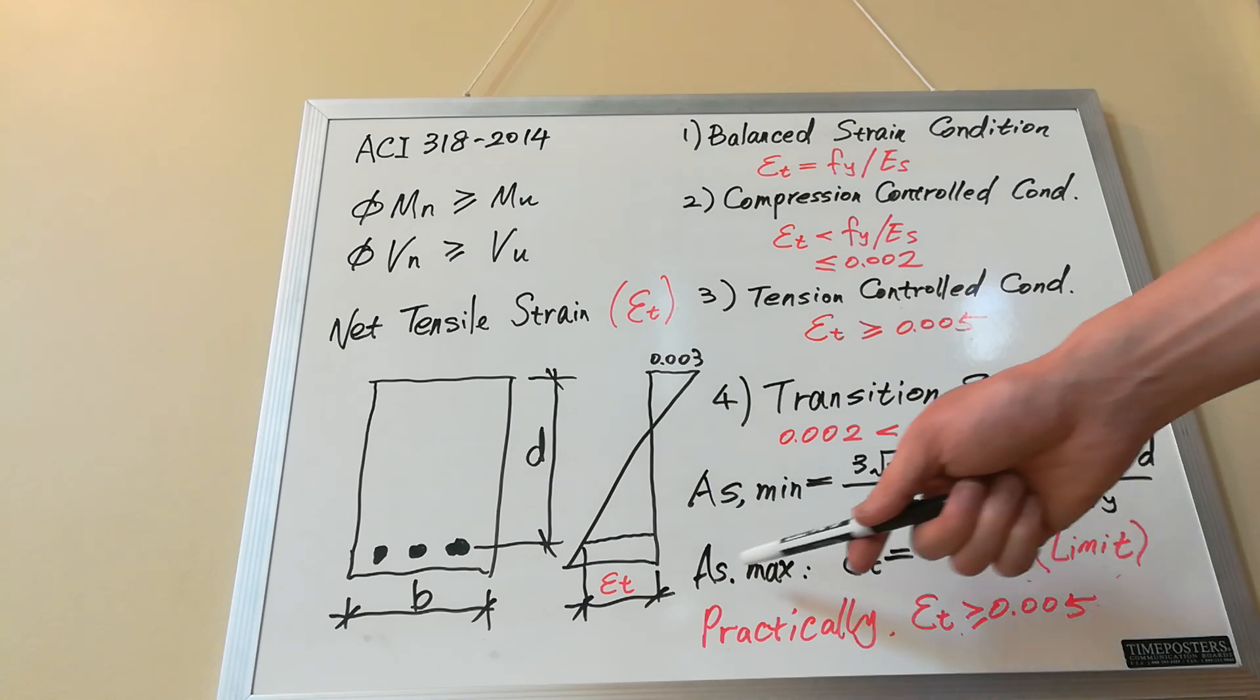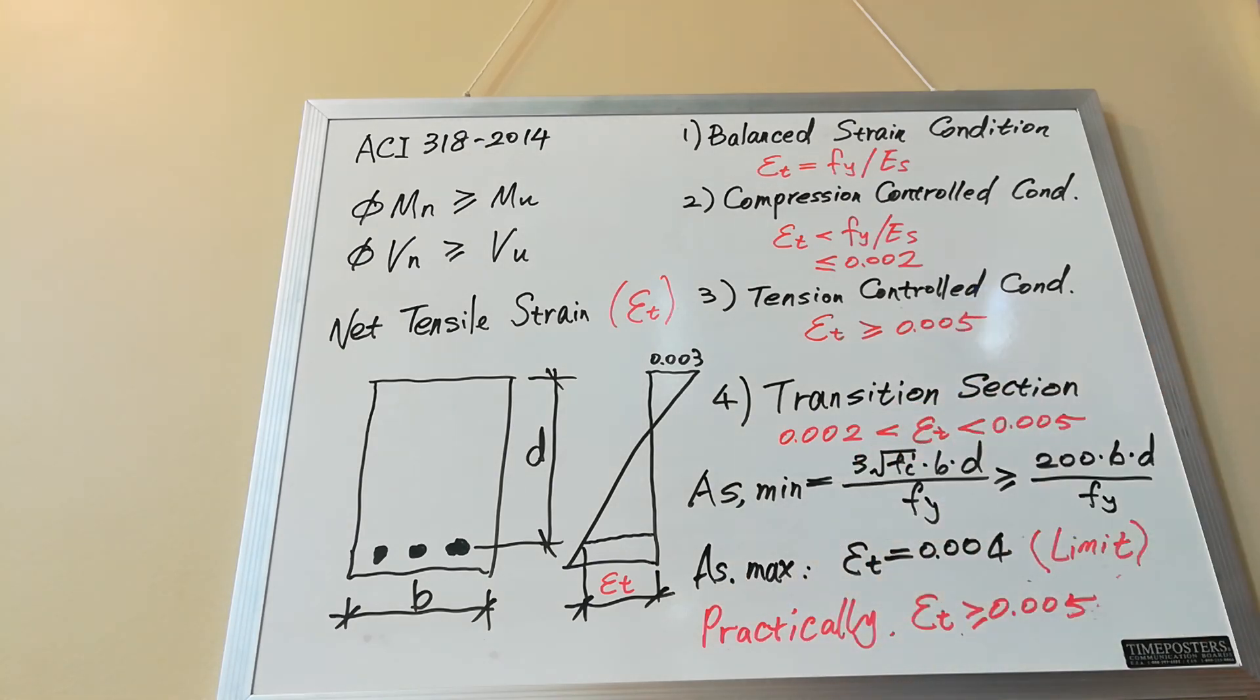As to the maximum steel area, ACI 318 limits the maximum reinforcement in a flexural member to that which results in a net tensile strain not less than 0.004. This is the limit. Practically, it is always good to use 0.005 to make sure that the flexural members are tension-controlled.